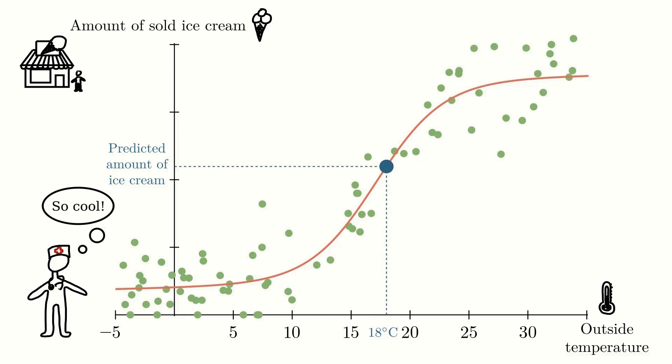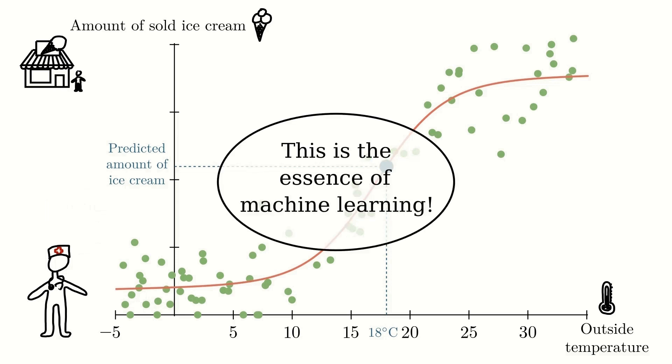This example actually illustrates the very essence of machine learning. You collect some data from the real world, you fit a line to this data, and can then use the fitted line to make predictions and thus solve different real world problems. This line is in fact a simple example of a machine learning model.